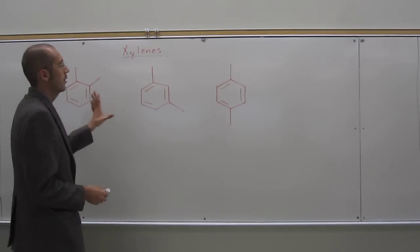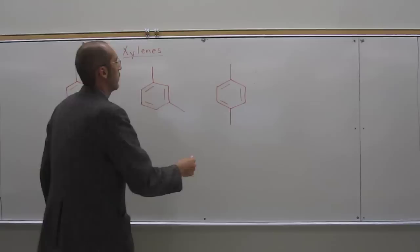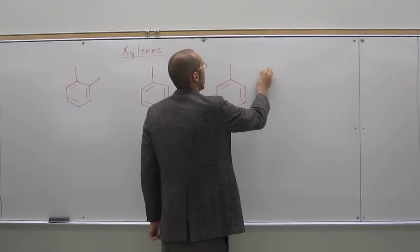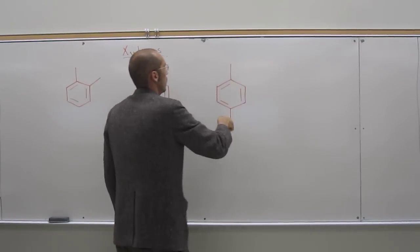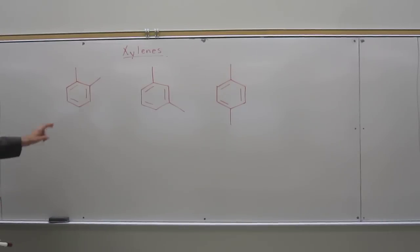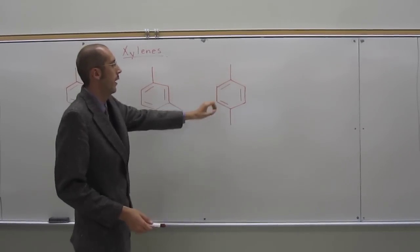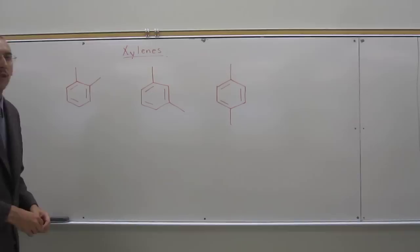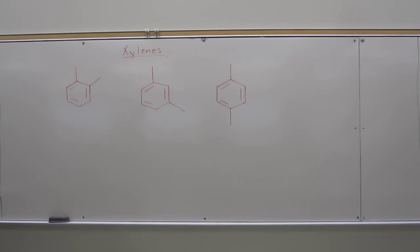So these disubstituted benzenes, they all have different names. They're all called, in fact, since it's two methyl groups, they're all called xylenes. But the position of the two substituted groups on the ring describes more of the name.